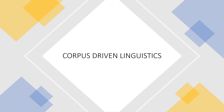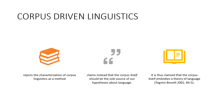Now look at the key characteristics of corpus-driven linguistics. It rejects the characterization of corpus linguistics as a method and claims that it is more of a theory. It claims instead that the corpus itself should be the sole source of our hypotheses about language. It is thus claimed that the corpus itself embodies a theory of language.